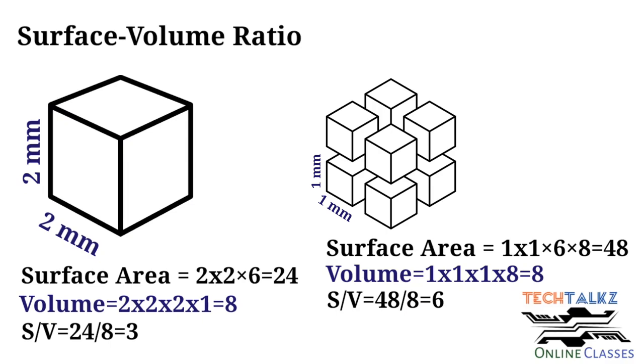As the surface to volume ratio increases, a greater amount of substance comes in contact with the surrounding material. When we cut the 2mm cube into 8 one-millimeter cubes, hidden surfaces are exposed. It can interact with the surrounding material effectively, and it will have more reactivity.